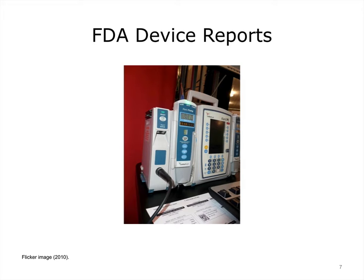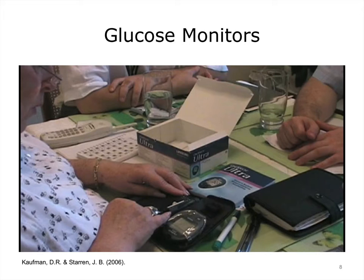There is an extraordinary range of devices, and many present formidable challenges to users. In a given year, there are over 25,000 FDA device reports related to user errors, and many have been implicated in patient or user deaths. Glucose meters are devices widely used by the growing number of patients with diabetes. Studies of various glucose devices, especially those with more advanced functions, show significant documented usability problems, particularly given the context that they are used by a growing number of elderly patients.